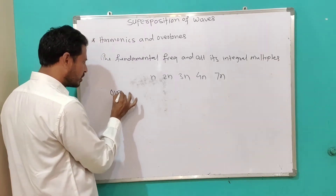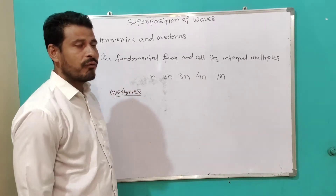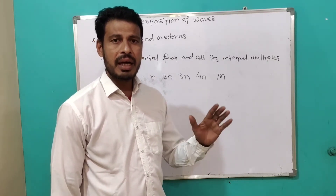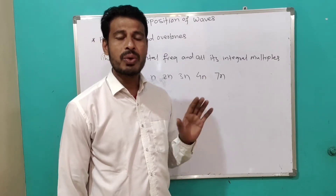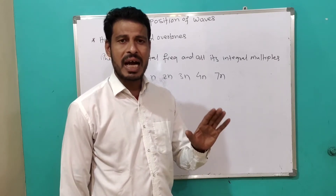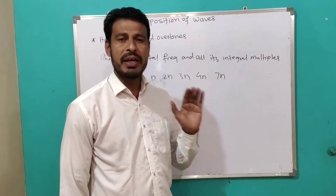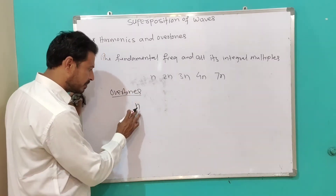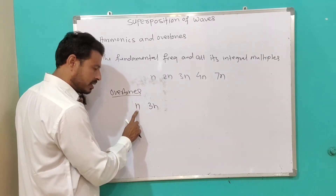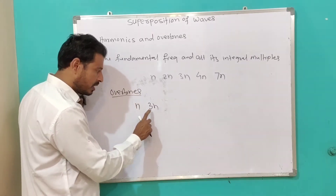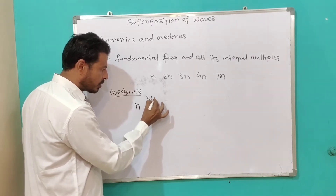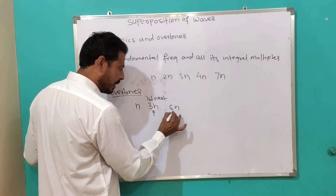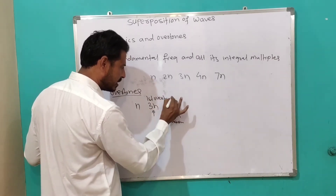Now, what is meant by overtone? The first higher frequency greater than the fundamental frequency is called the first overtone. For example, consider 3n — it is the third harmonic and the second overtone. And 5n — it is the fifth harmonic and the second overtone.